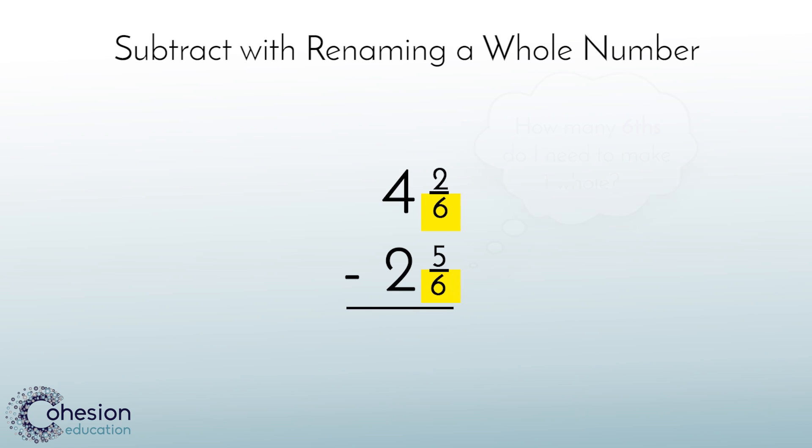Ask yourself, how many sixths do I need to make one whole? I know that my denominator represents how many pieces I would need to make one whole. So the answer is 6, 1 sixth parts to make one whole.